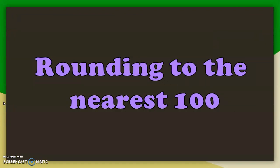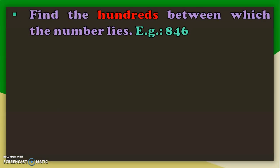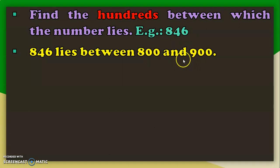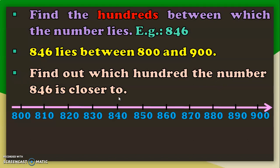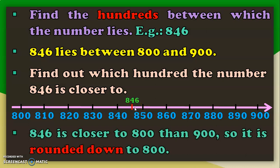Next, let us move on to rounding to the nearest 100. The rule is: find the hundreds between which the number lies. Here, the example is 846, which lies between the hundreds 800 and 900. Using the number line from 800 to 900, 846 is less than the midway point of 850, meaning it is closer to the lower limit. So, 846 is rounded down to 800.